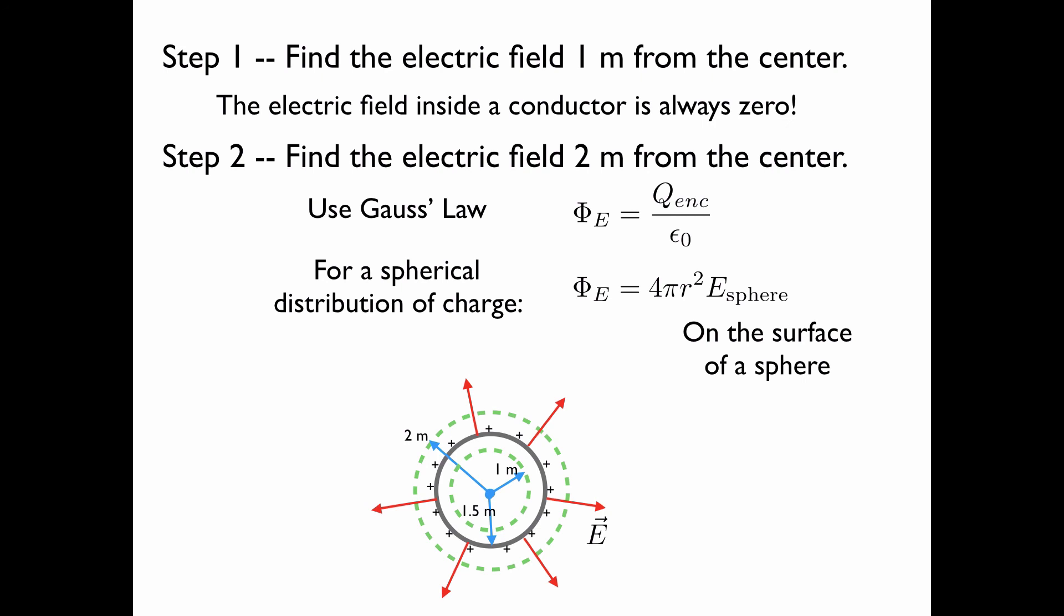Now this is only true on the surface of a sphere. If the outer shape was not a sphere, it was an ellipsoid, then the electric field would not be constant over the whole ellipsoid. It would vary. It would be less at points that are farther away and greater at points that are closer. But since we are looking for the electric field on this shell that is spherical, we can use this relation.